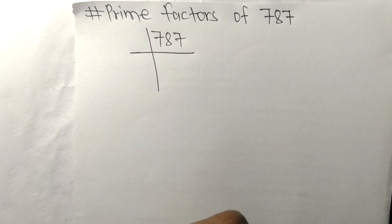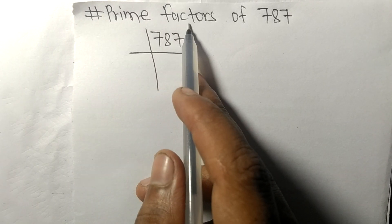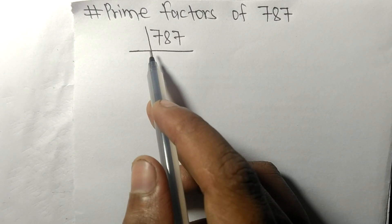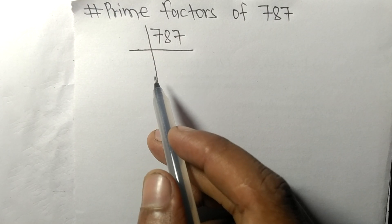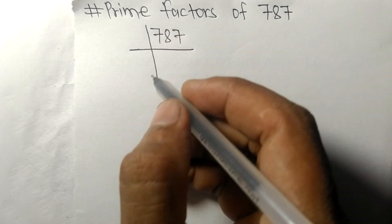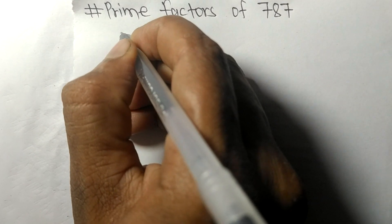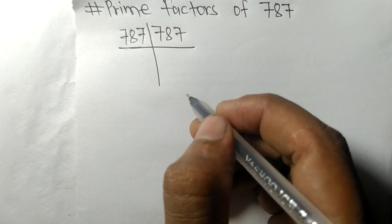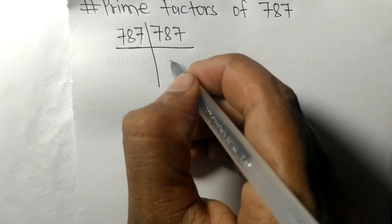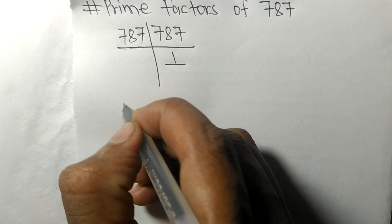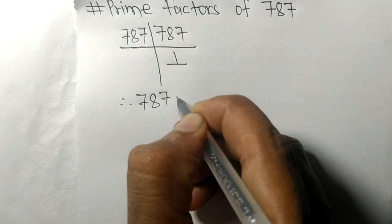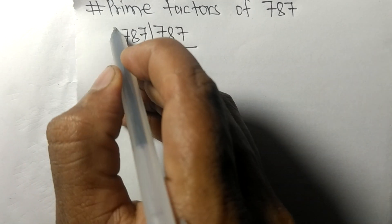Today in this video we shall learn to find the prime factors of 787. 787 is a prime number, so it is exactly divisible by 787 only. On dividing, we get 1.